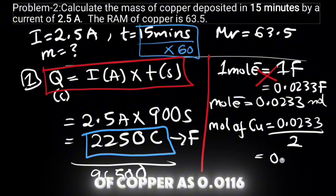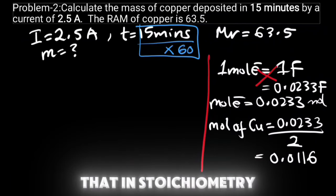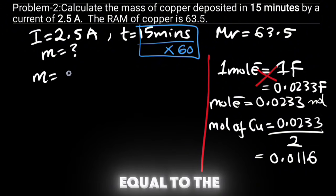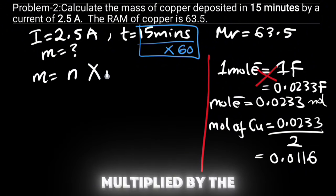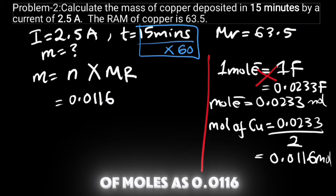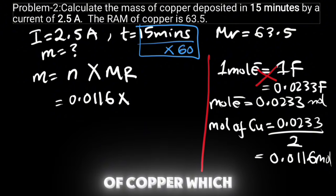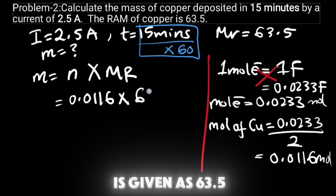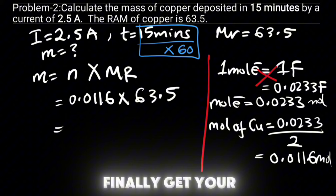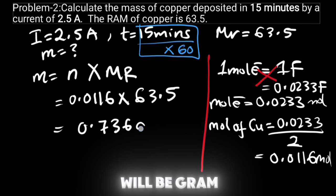Now that we have the mole, let us find the mass finally. We know that in stoichiometry, the mass is equal to the number of moles multiplied by the molar mass. Here we got our number of moles of 0.0116, so we'll multiply this by the molar mass or the RAM of copper, which is given as 63.5. Multiply this and you will finally get your mass as 0.736, and the units will be grams.